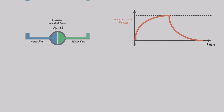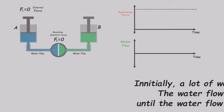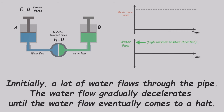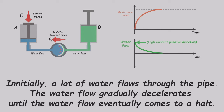Can you predict what occurs with the water flow during this period? Initially, the membrane is in its resting state, almost as if there is no membrane present at all. Consequently, even a slight force can move a significant amount of water through the pipe. However, as the water begins to move, the membrane expands and starts to exhibit resistance to the water flow, causing it to gradually decelerate. This process continues until the water flow eventually comes to a halt.